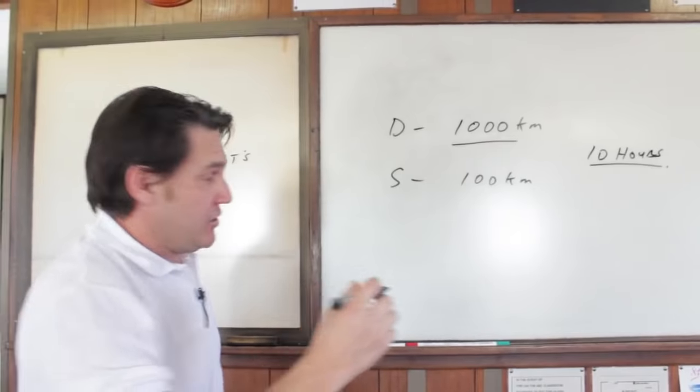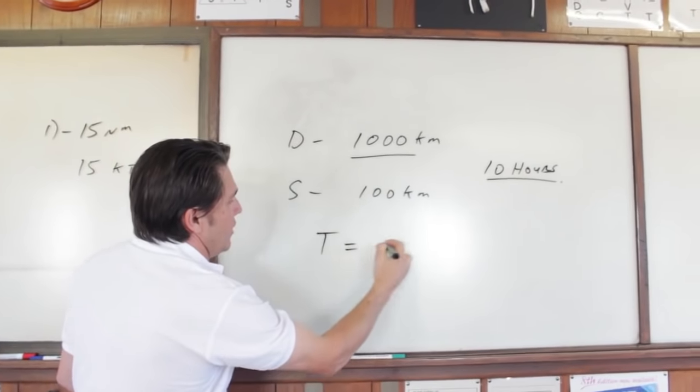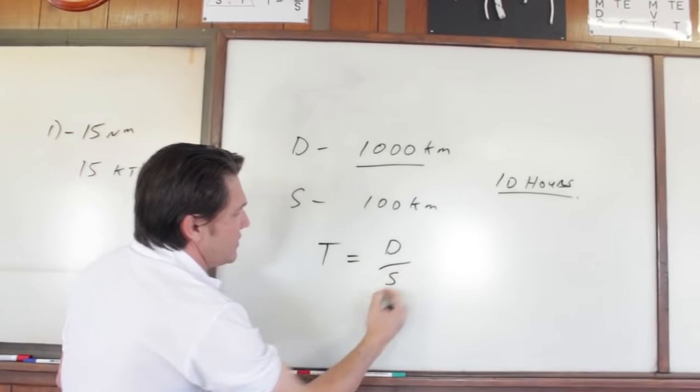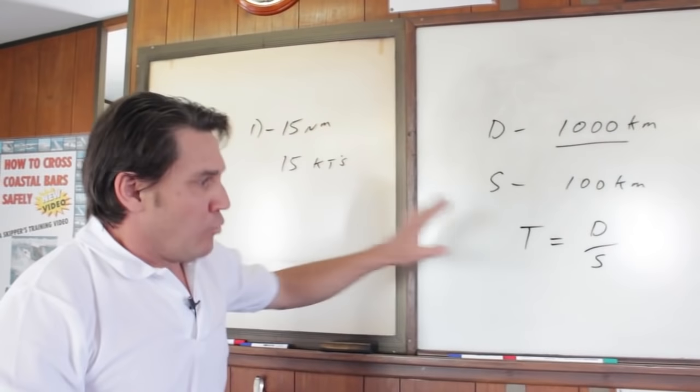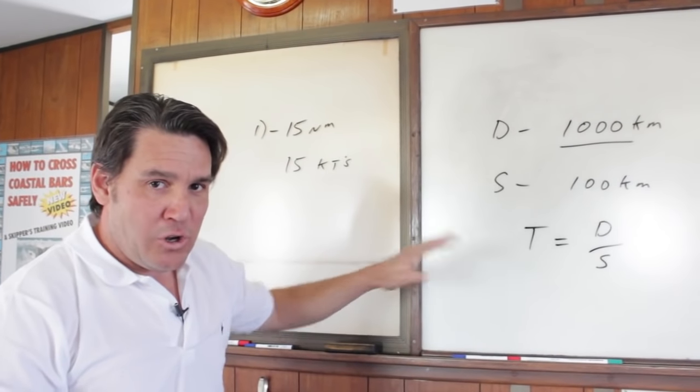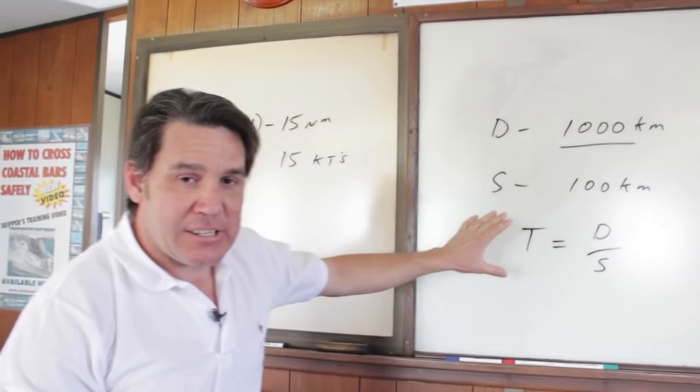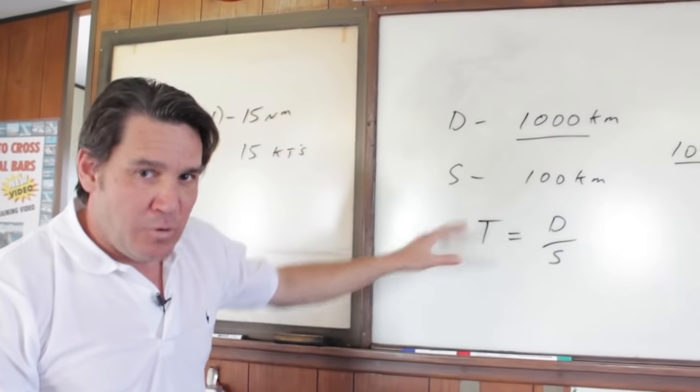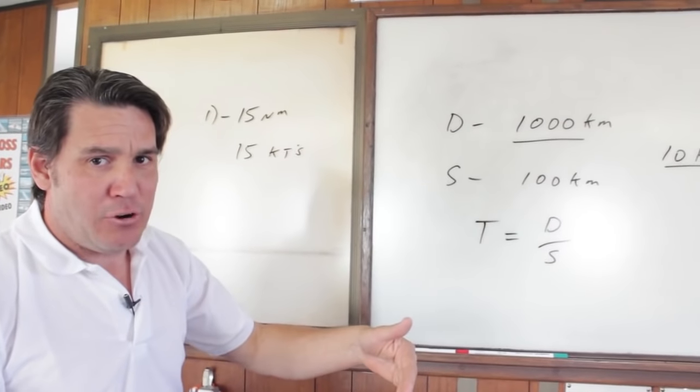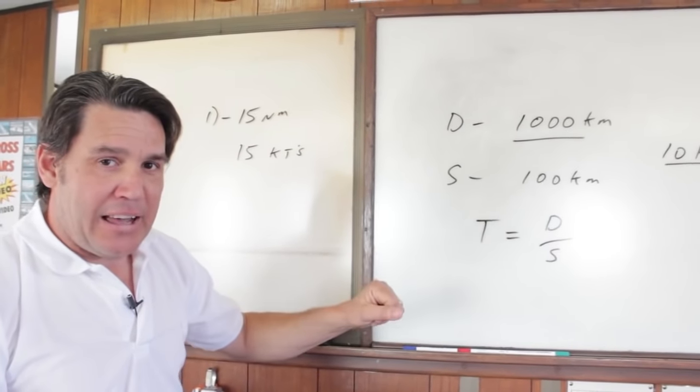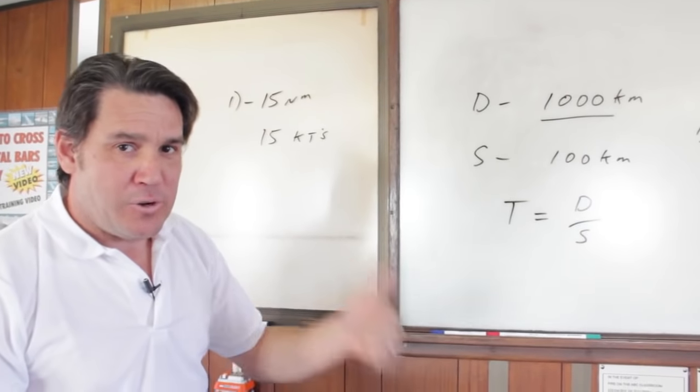What you need to understand is time equals distance divided by speed. When we talk fuel consumption on a vessel, we always talk in litres per hour. So we're going to work out how long it's going to take us to get somewhere. We spoke about how much fuel your boat would use per hour. Once we've done our calculation, we must allow enough for reserve.